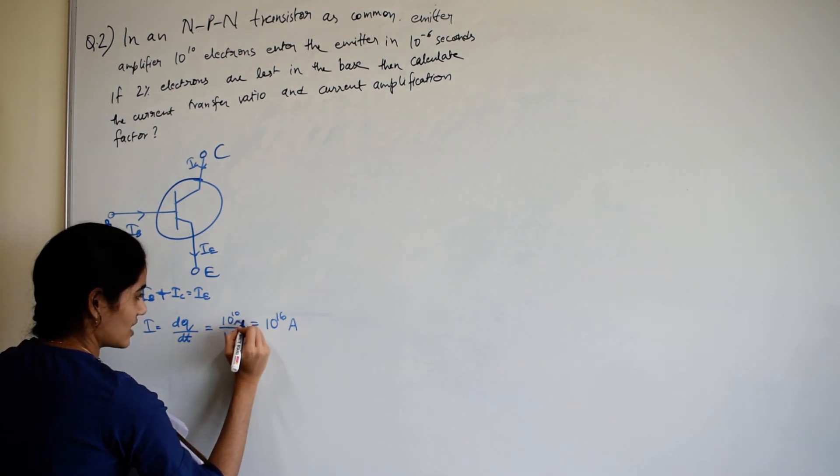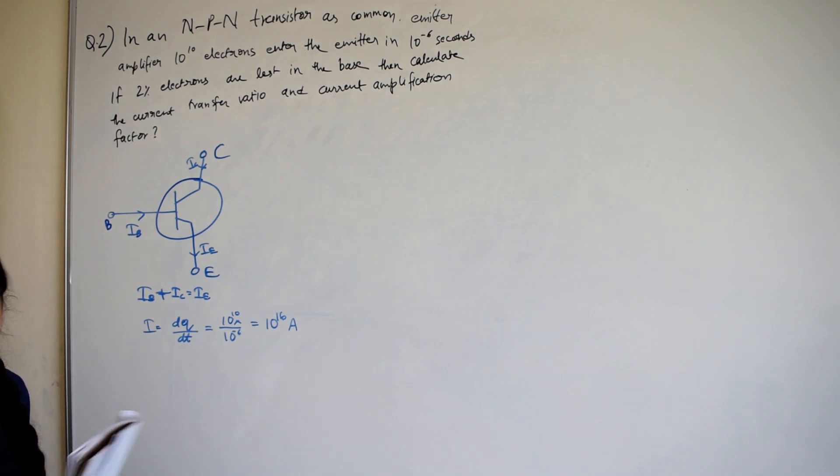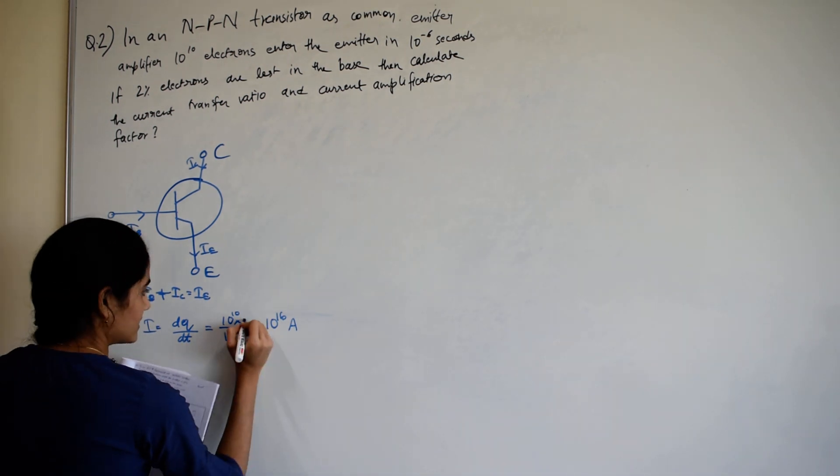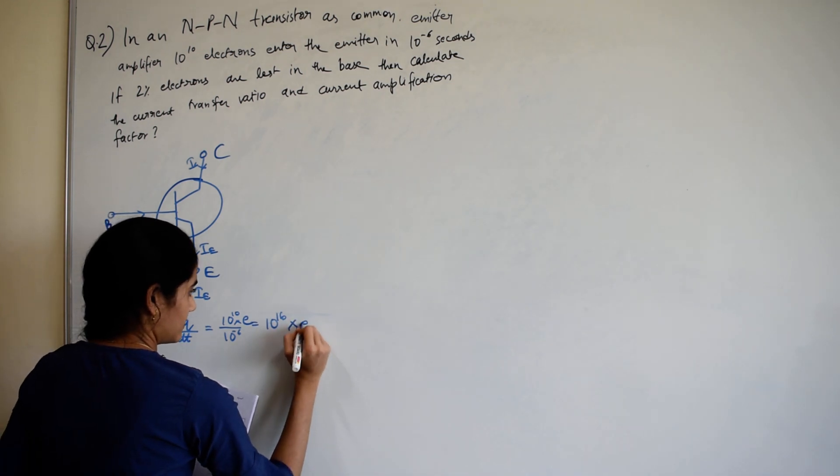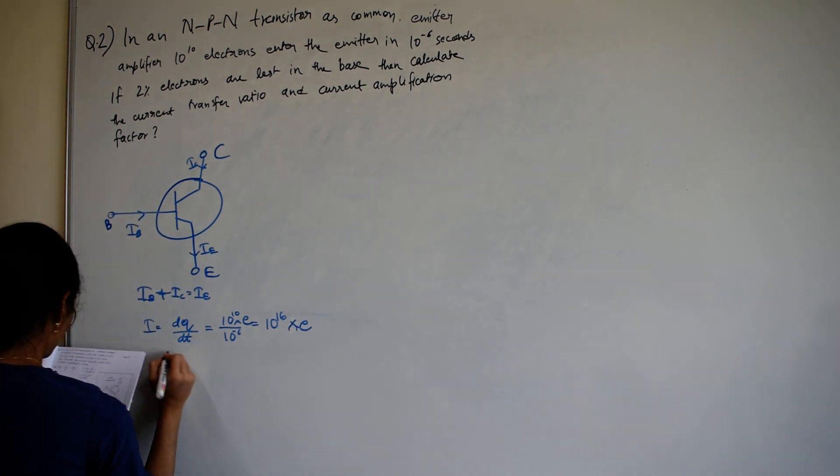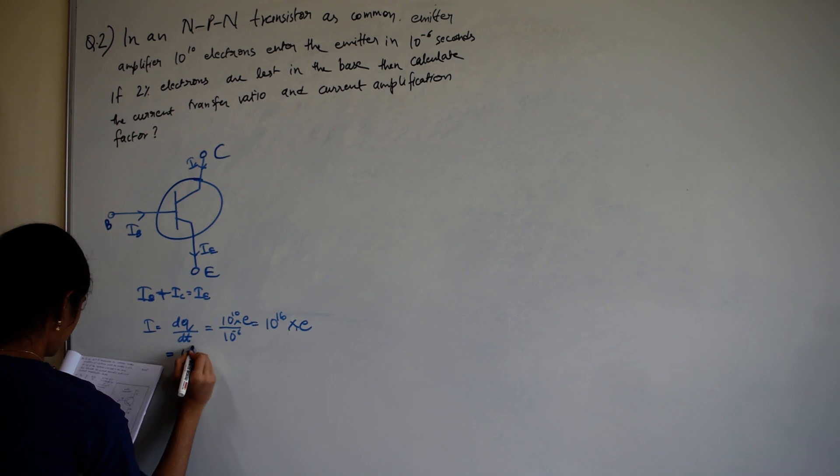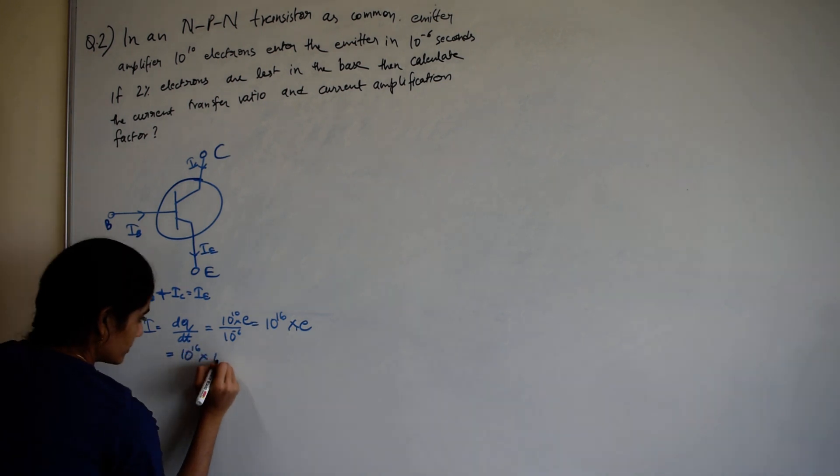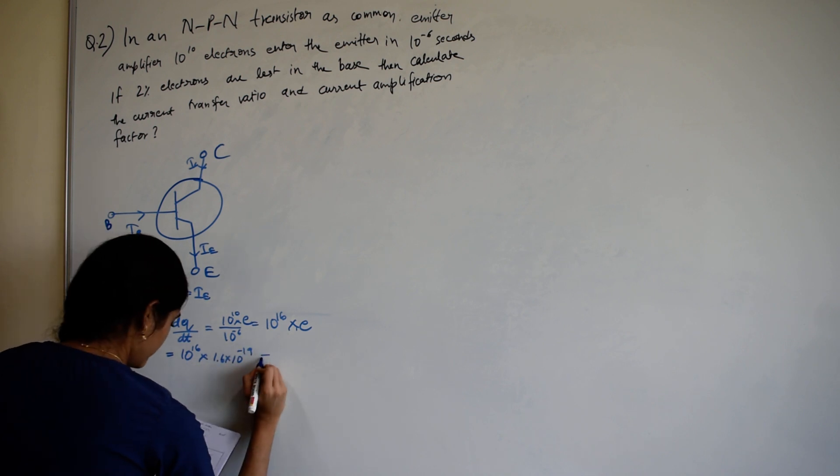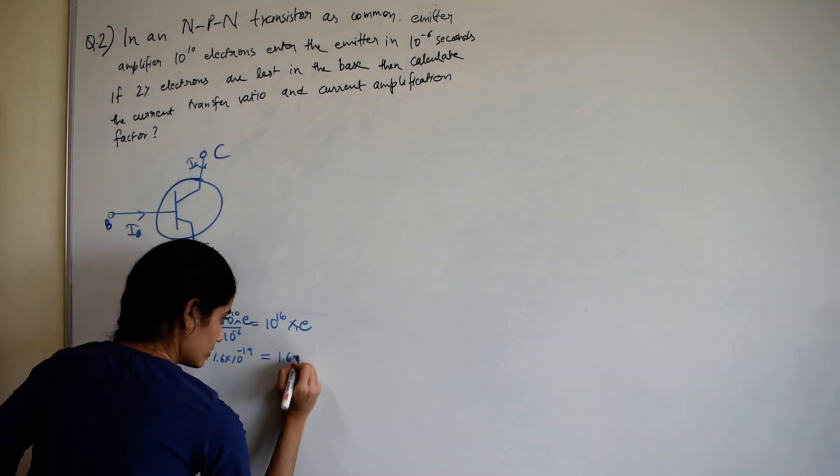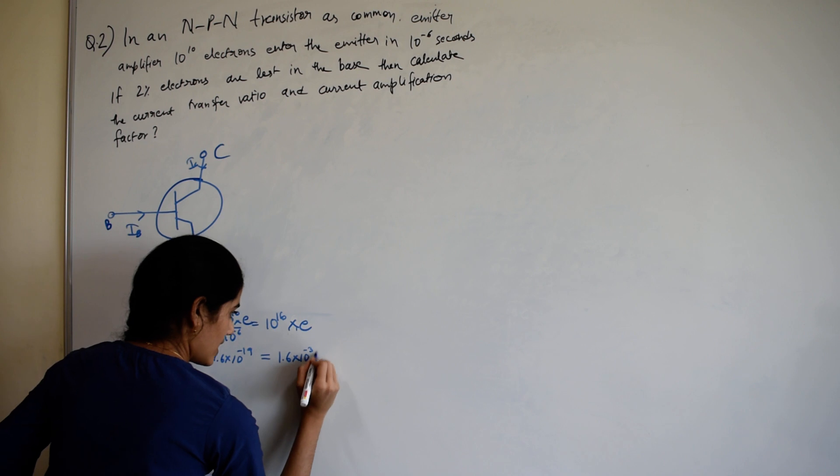Charge on an electron, which is equal to 10 raised to 16 into 1.6 into 10 raised to minus 19. So current would be 1.6 into 10 raised to minus 3 ampere. Current is in emitter.